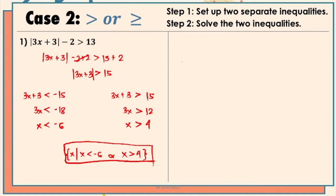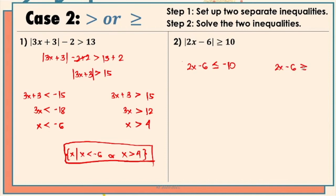Now let's move on to the second example. Notice that the absolute value is already isolated on one side, so we proceed with the two separate inequalities. We have 2x minus 6 less than or equal to the negative number on one side, and 2x minus 6 with the opposite symbol and the additive inverse on the other. On the left side, we remove the negative 6, which gives us 2x is less than or equal to negative 4.